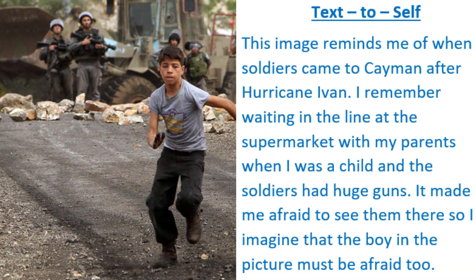Here's my text-to-self connection: This image reminds me of when soldiers came to Cayman after Hurricane Ivan. I remember waiting in line at the supermarket with my parents when I was a child, and the soldiers had huge guns — it made me afraid to see them there, so I imagine that the boy in the picture must be afraid too. My text-to-self connection helps me understand what the boy might be feeling, related to an event I experienced when I also saw soldiers with large guns.